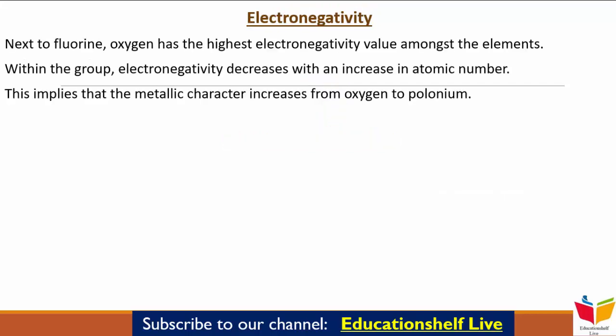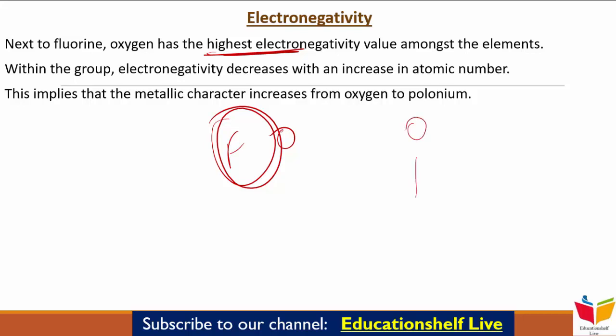Next characteristic है हमारा Electronegativity। Fluorine के बाद Oxygen ही वो element है जिसकी highest electronegativity value होती है। Group में जैसे-जैसे Atomic Number बढ़ता जाता है, electronegativity कम होती जाती है, जिसका मतलब है कि metallic character बढ़ता जाता है।